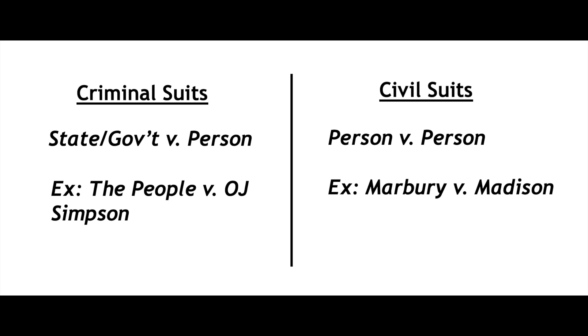Criminal suits involve commissions of crime — cases for things like murder, thievery, and burglary. Someone has done something that is against the law of the land, and now the state is prosecuting that person. Civil suits, on the other hand, would be suits for things like contract disputes, property disputes, and things of that nature. Even as far back as the Middle Ages, the judicial system distinguished between criminal and civil actions.